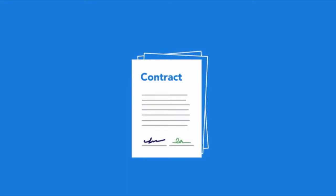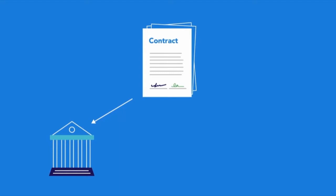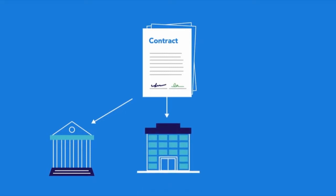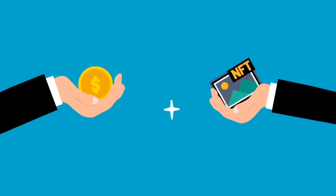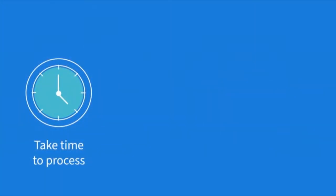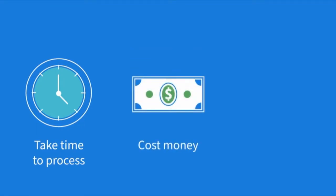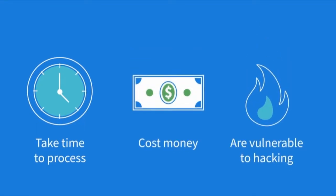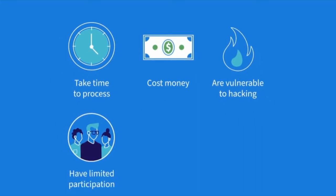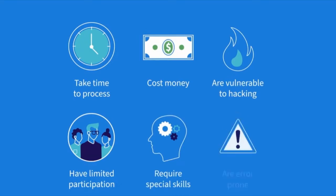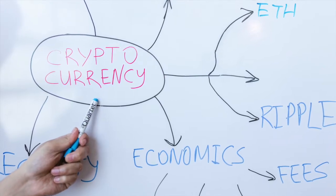We see this in most contract work. A contract between two entities completed over the internet still requires one or more central authority validators. For example, with a mortgage: banks must validate available funds and approve loans, title companies must validate properties, and legal professionals must validate signatures and other legal requirements. Each of these independent and historically important central authorities has unique power that levies considerable overhead. The transactions written to the relevant databases all take time to process, impose costs, are vulnerable to hacking, provide limited opportunity for participation, require special skills, and can be error prone.